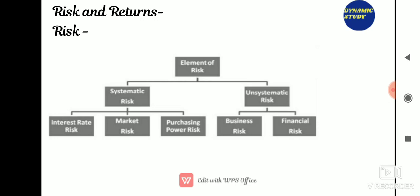Risk and return: risk is the uncertainty associated with the returns from an investment. An investment whose returns are fairly stable is considered low-risk, whereas an investment whose returns fluctuate significantly is considered highly risky. Risk is basically categorized into two parts: systematic risk and unsystematic risk. Systematic risk has three sub-types — interest rate risk, market risk, and purchasing power risk. Unsystematic risk is classified into business risk and financial risk.